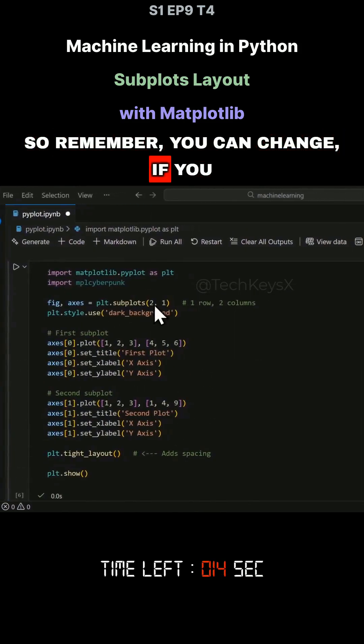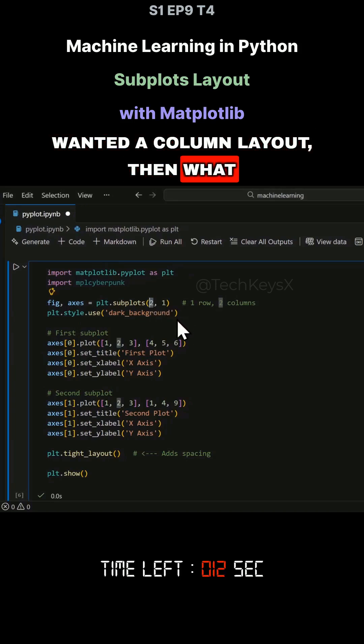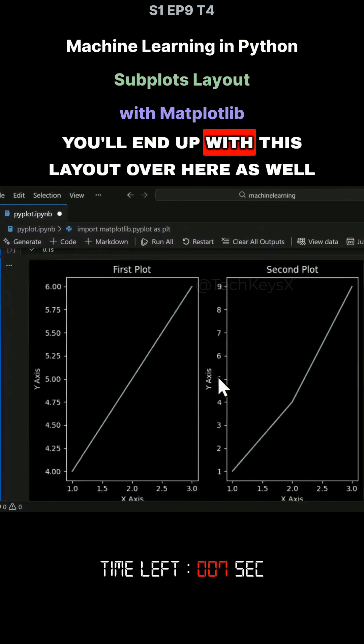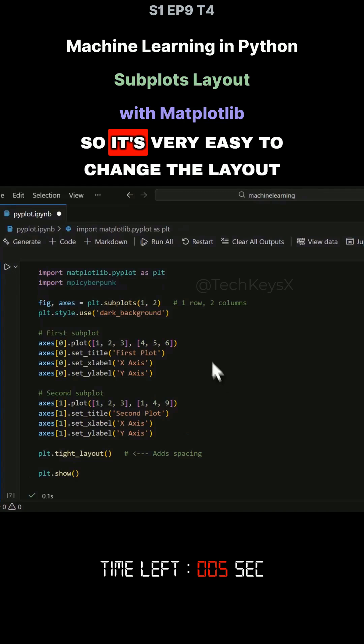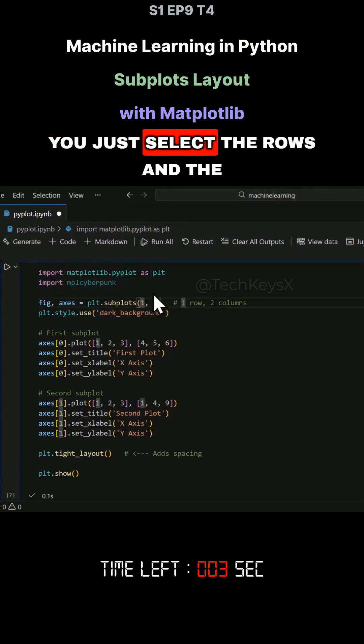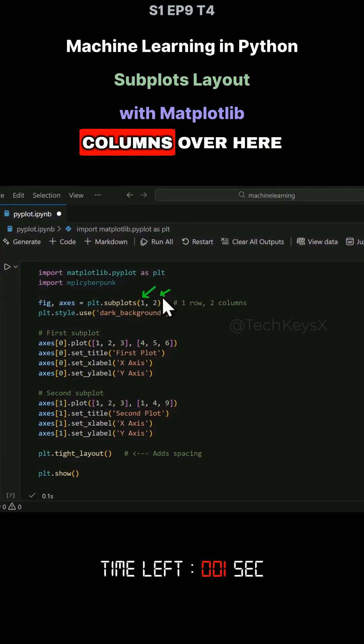So remember, you can change this. If you wanted a column layout, what you can do is change that to one and say you wanted two columns, and then you'll end up with this layout over here as well. So it's very easy to change the layout. You just select the rows and the columns.